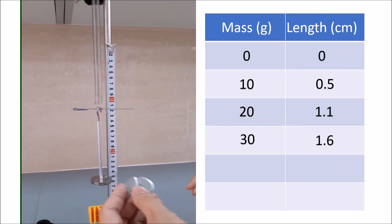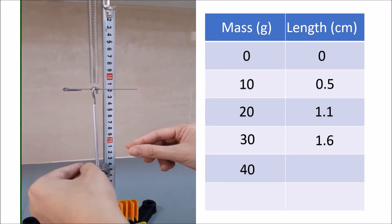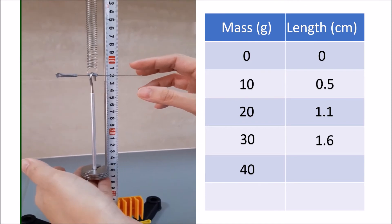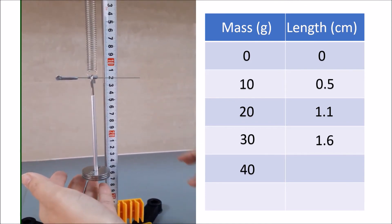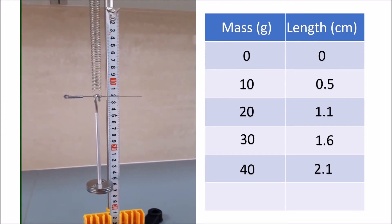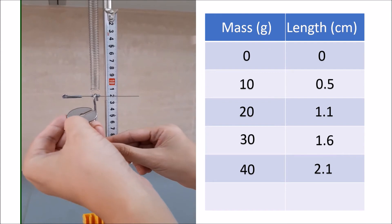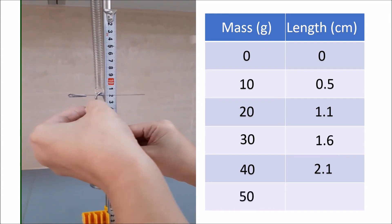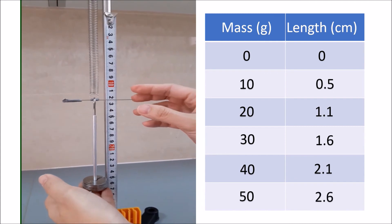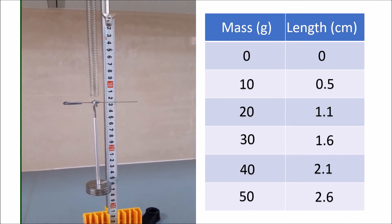For the 40 grams, we have 2.1 centimeters. And adding another 10 grams for a total of 50 grams, we have 2.6 centimeters.